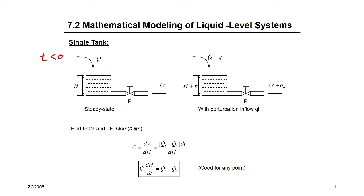At T equal to or greater than zero, starting from T equals zero, I made a small perturbation — a small change or small deviation — in the flow in, and I'm going to call it small qi. As a result, there was a small deviation in the flow out of the valve, called small q-out, and also a small change in the head inside the tank, called small h.